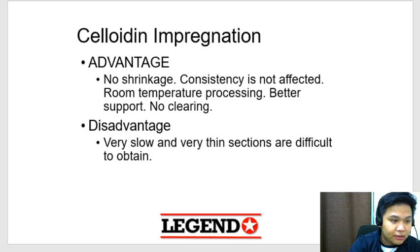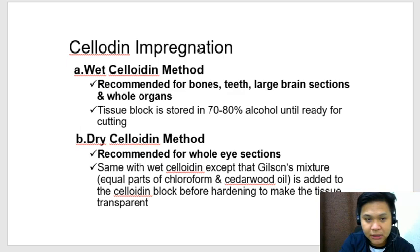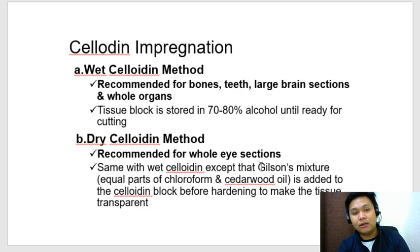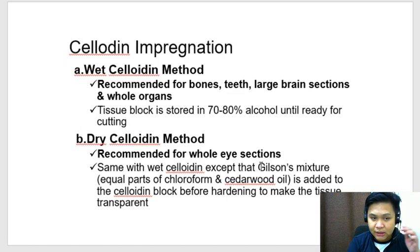There are two methods of soluble impregnation: wet soluble and dry soluble. The difference is where you store the tissue block prior to soluble impregnation. For wet soluble, you store the tissue block in 70–80% alcohol, and it is used for bones, teeth, large brain sections, and whole organs. Dry soluble uses Gilson's mixture for storage and is for whole eye sections.